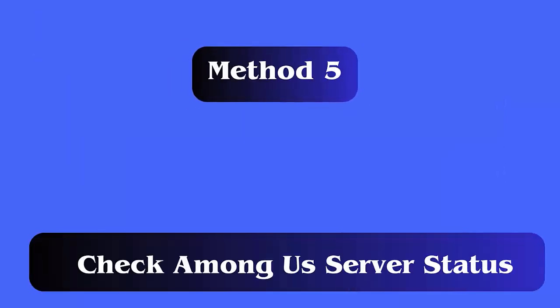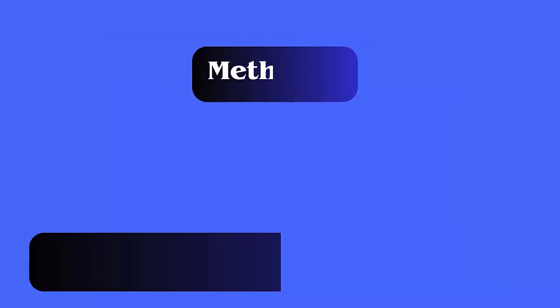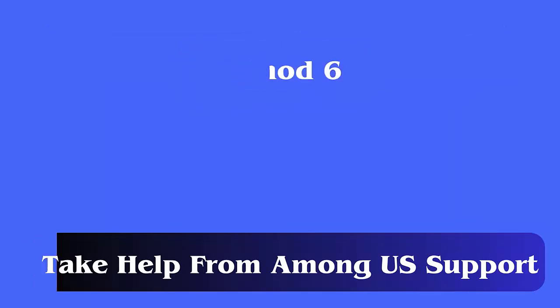Method five: Check Among Us server status. This kind of error can also occur due to a server outage. If this is the reason, the app will not work and you will need to be patient. The best way to find the server error is by visiting the Down Detector website.